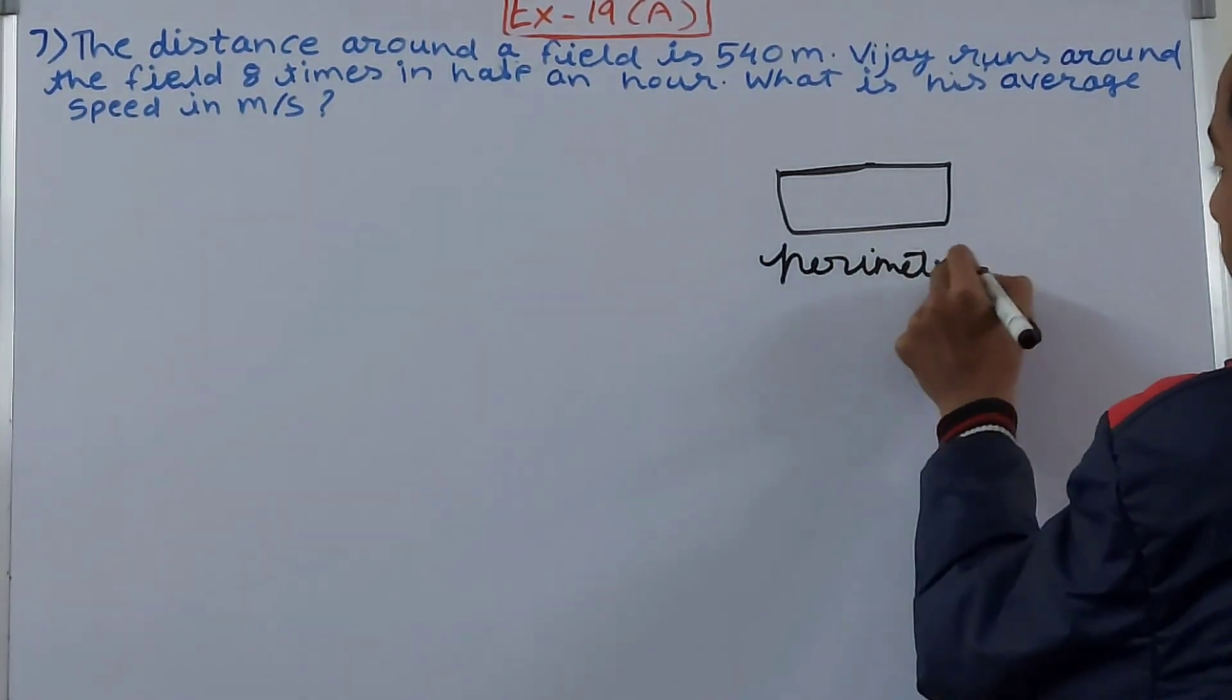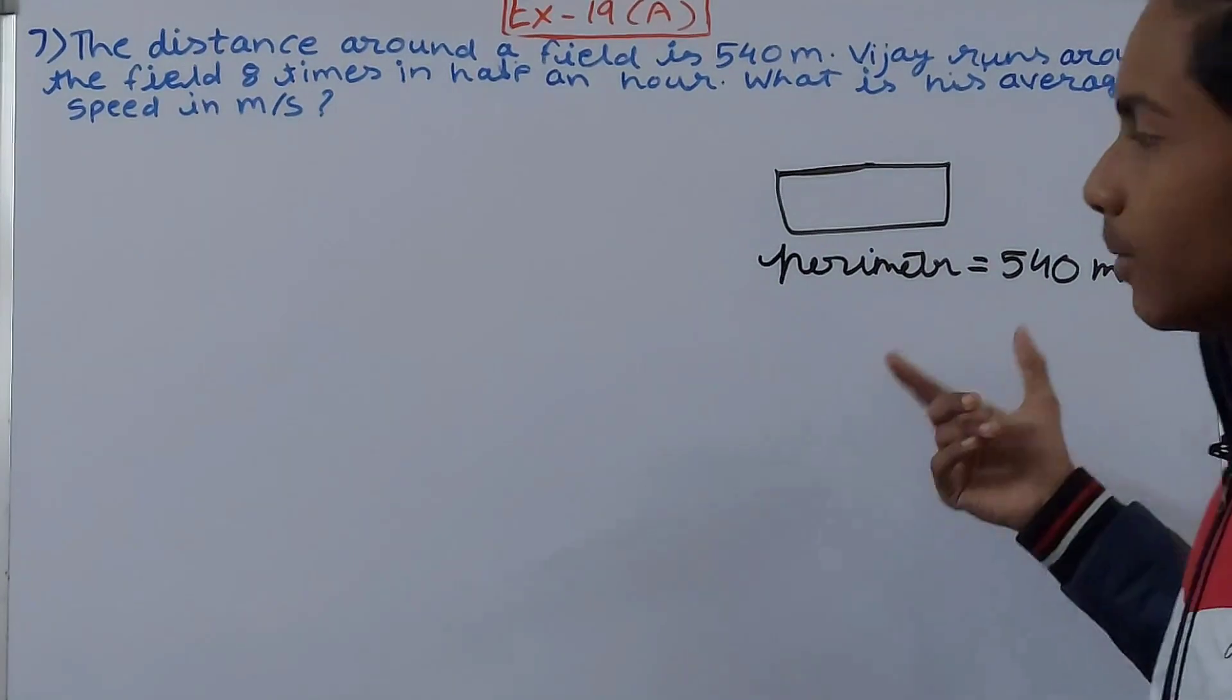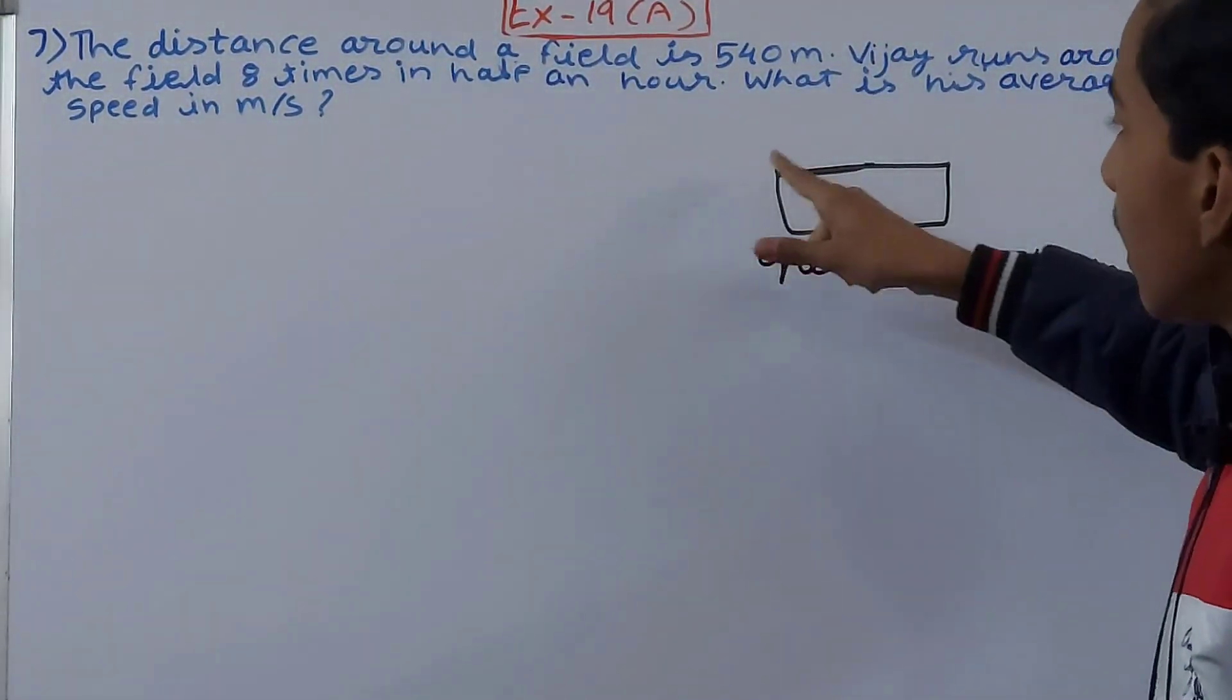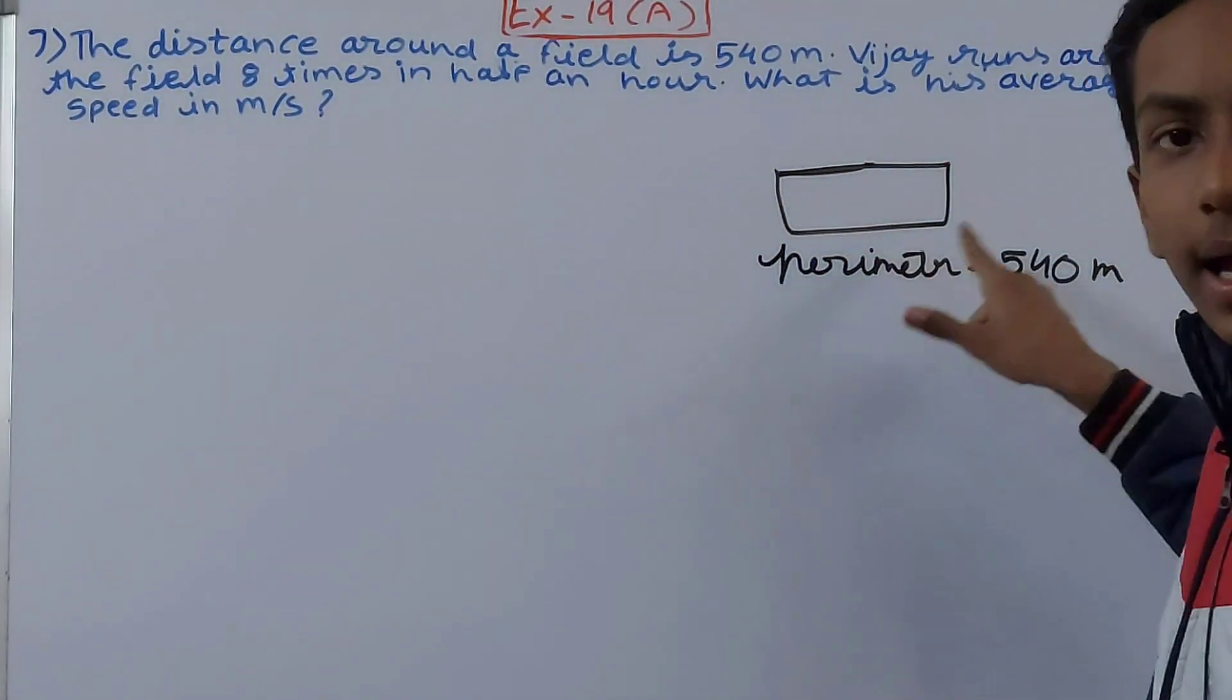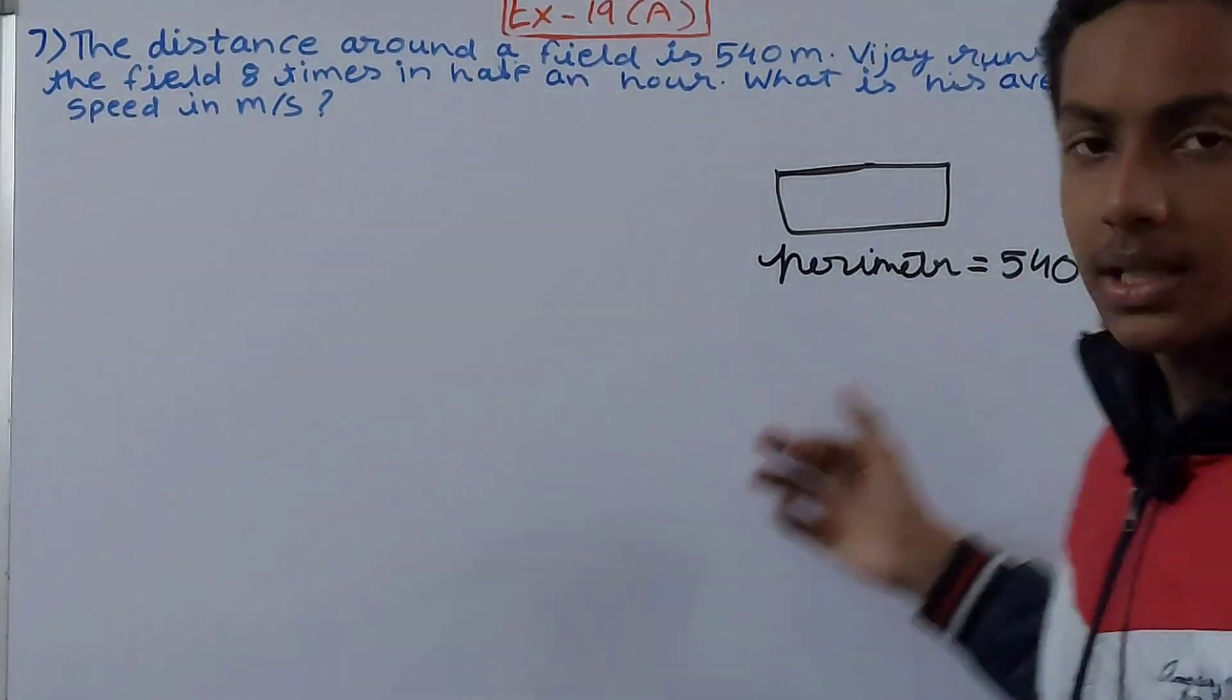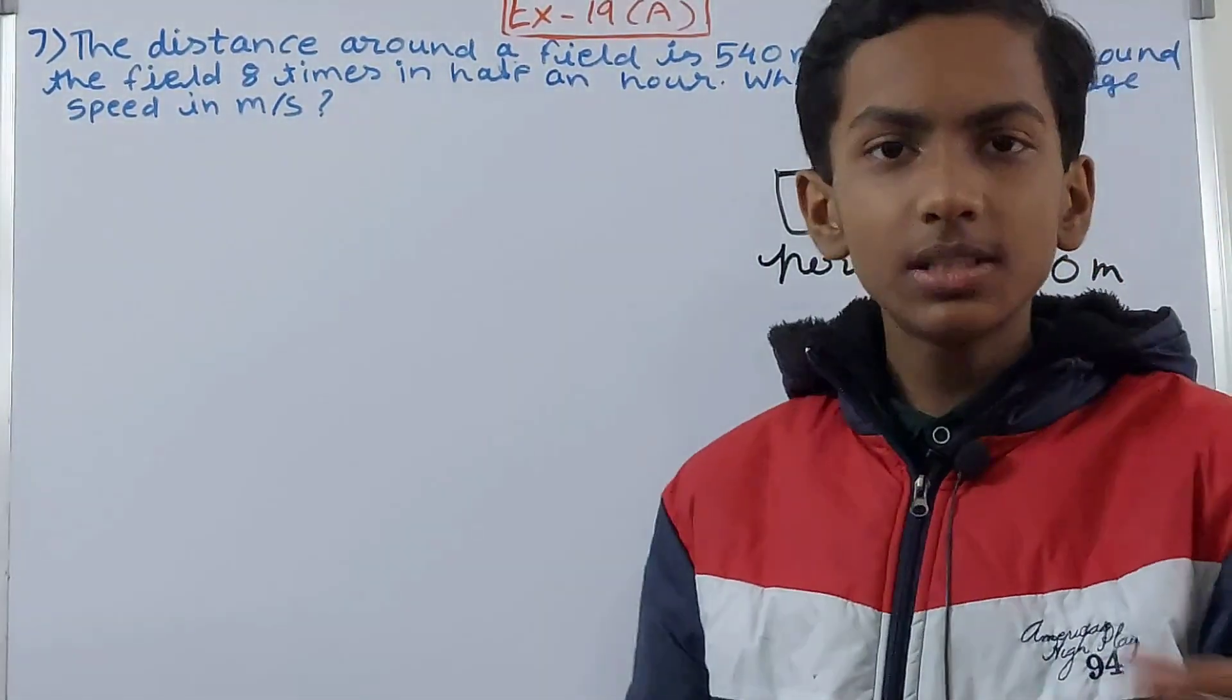Perimeter is 540 meters. How do we know this? Because it says the distance around a field. Around this field means the boundary of the field and that is called the perimeter of the field. So perimeter of this thing is 540 meters, or in simple terms we can say the distance around the field is 540 meters.